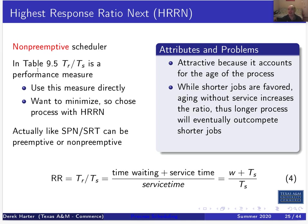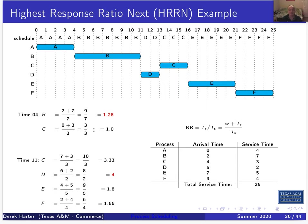You could actually have a preemptive version of HRRN just as SPN and SRT are the non-preemptive and preemptive pair. The book only shows a non-preemptive version, and I'll only go through that as well. For the non-preemptive version, once we start a process it runs until it finishes. You could also preempt on process arrival and recalculate response ratios.